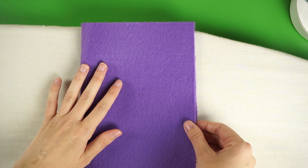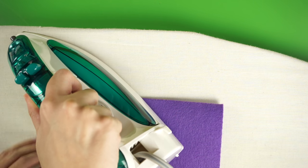Take the piece of felt you're using as the cover and fold it in half. Iron the fold on a low setting to give it a nice crease.